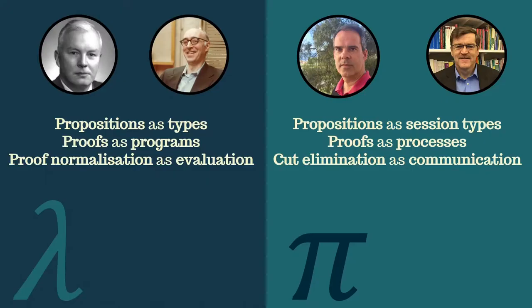The simply-typed lambda calculus is built on firm logical foundations, so the Curry-Howard correspondence tells us that propositions in logic can be thought of as types, proofs can be thought of as programs, and proof normalization can be thought of as evaluation.